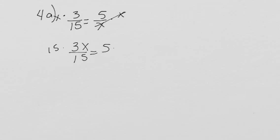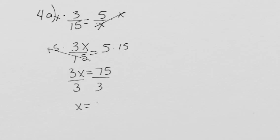Then I can multiply by 15 on each side, and I get 3x equals 75. Then divide by 3 on both sides, and I get x equals 25. And I can check that in the calculator.